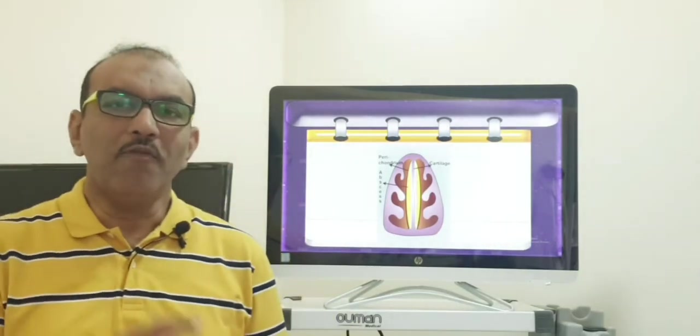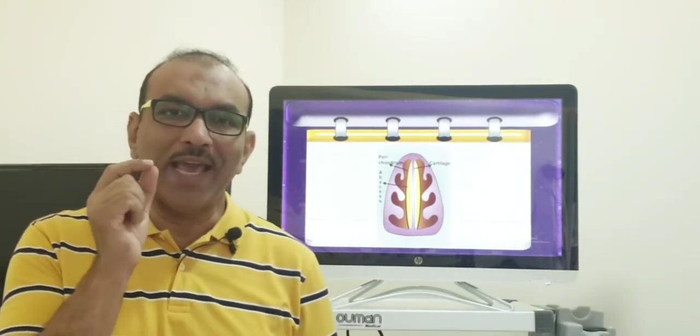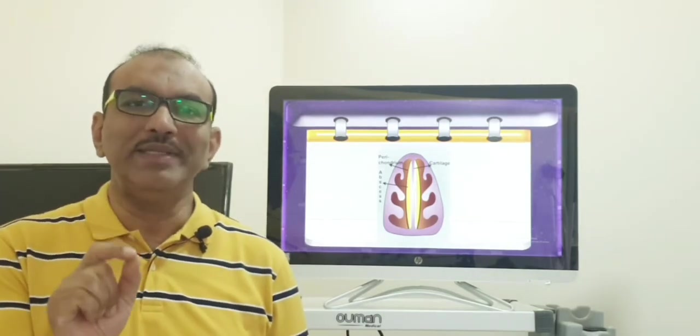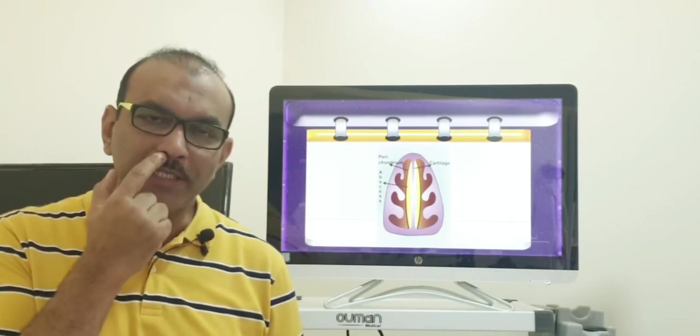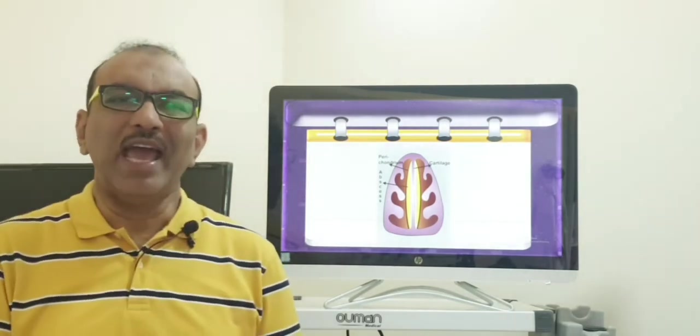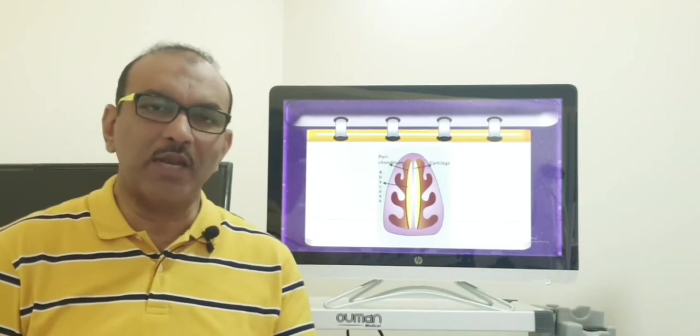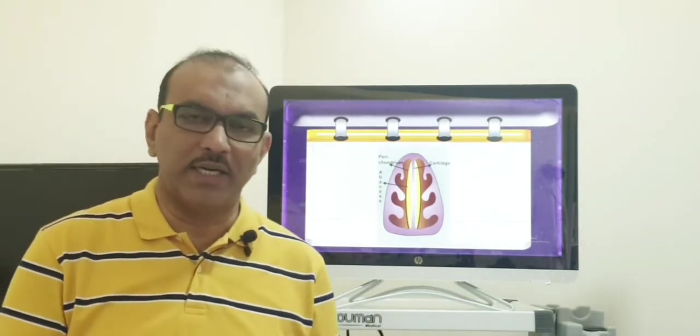Second cause being furunculosis, that is infection of the hair follicles. Hairs will be seen in this area inside. If there is infection of the hair follicle, that is called as furunculosis. So that can spread from here anteriorly, it can spread to the septum. And very rarely, septal abscess can be secondary to typhoid and other conditions.